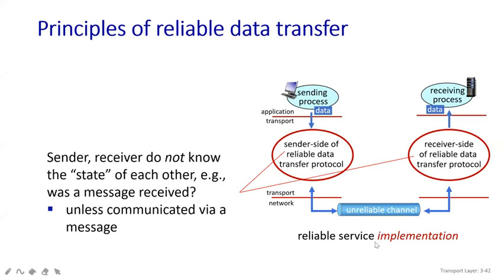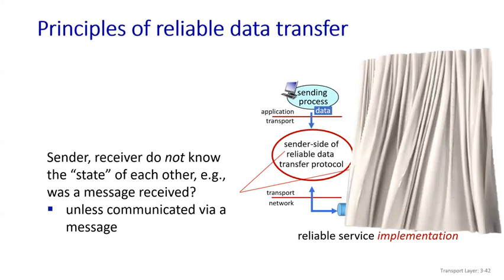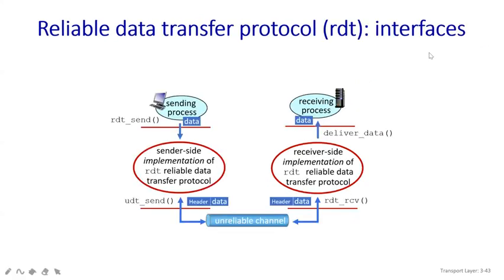One more important point: the sender and receiver don't know the state of each other. The sender will not know whether the receiver has received all the messages, and the receiver won't know how many data packages the sender is going to send — unless they send an acknowledgement. Once the acknowledgement reaches the sender, the sender knows that the receiver has received the data package.